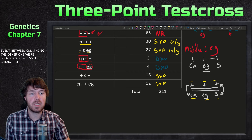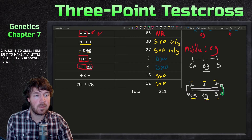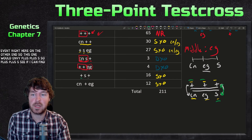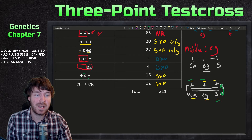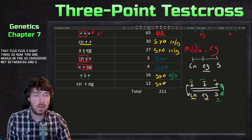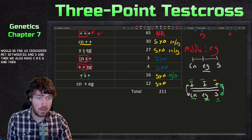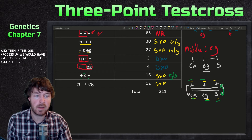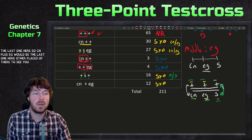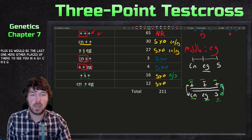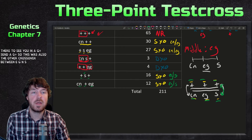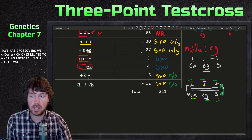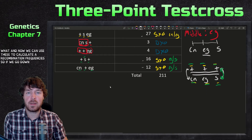For the other interval, a crossover between eg and s gives plus plus s, and also cn eg plus — find those in the data as well. These define single crossover events between eg and s. Now we have all crossover classes identified and can use the progeny numbers to calculate recombination frequencies.